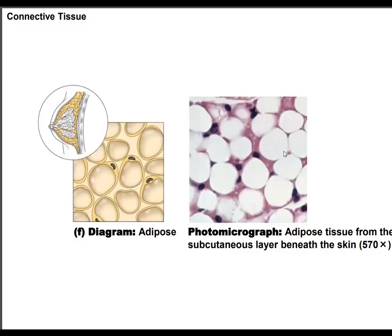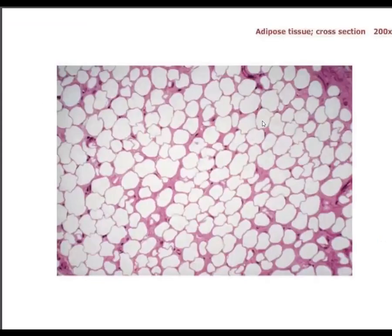The next one is adipose tissue. Adipose tissue is your fat — we have large collections of adipose tissue in the breasts, the buttocks, and the belly. Adipose looks like cottage cheese; each of these little bubbles is a ball of fat. The big tissue category is connective and the specific tissue name is adipose.